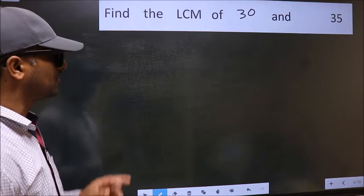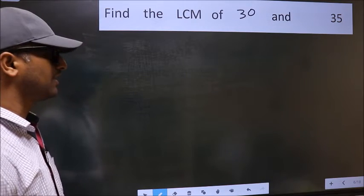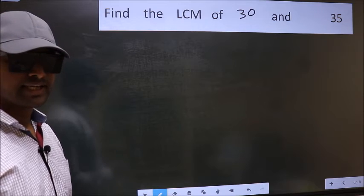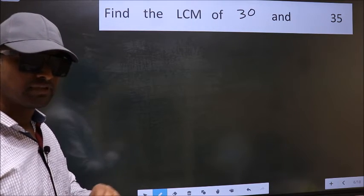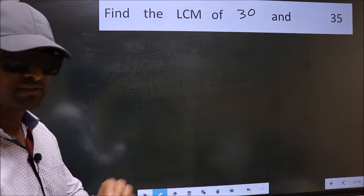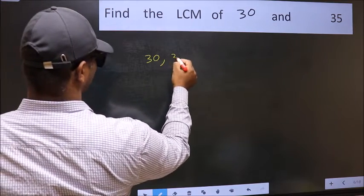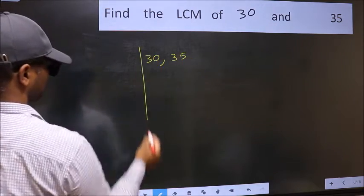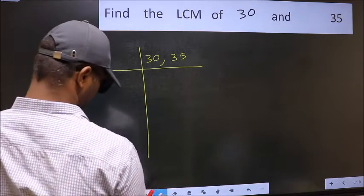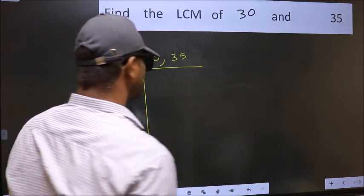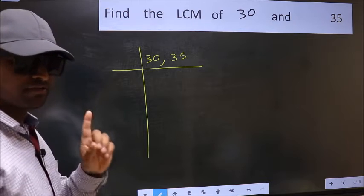Find the LCM of 30 and 35. To find the LCM, we should frame it in this way: 30, 35. This is your step 1.